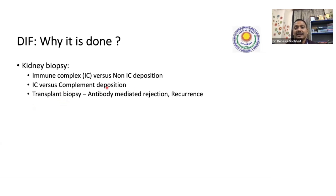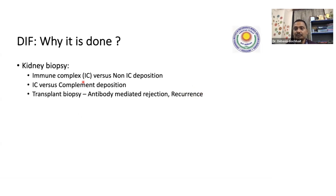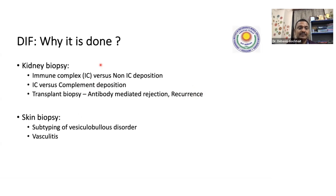In transplant biopsy, to know whether there is antibody-mediated rejection, we do a stain called C4D. C4D helps us know there is antibody-mediated rejection. Also, to know recurrence of disease — for example, if an SLE patient is transplanted, we can detect whether the disease is coming back with the help of immunofluorescence. That covers kidney biopsy. The second indication is subtyping vesiculobullous disorders and vasculitis of skin.